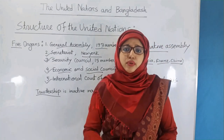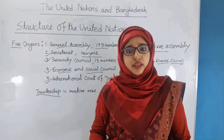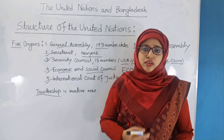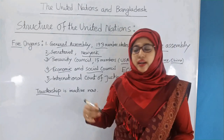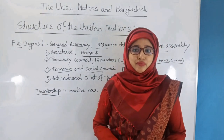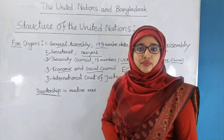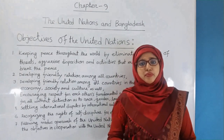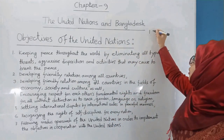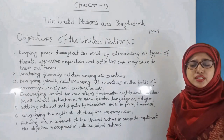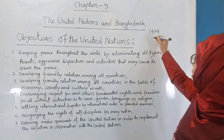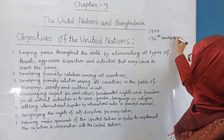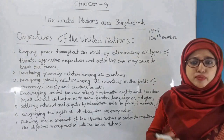So there are five organs of the United Nations in total. Bangladesh got the membership of the United Nations in 1974, as the 136th member.